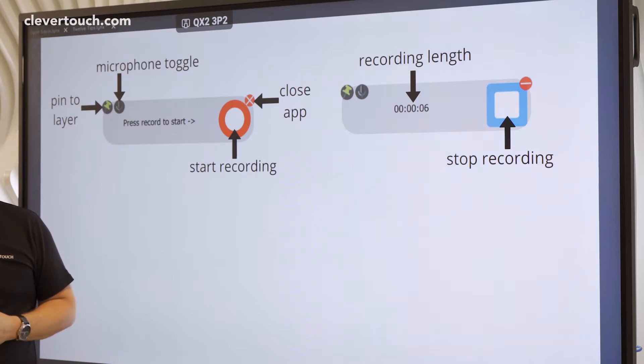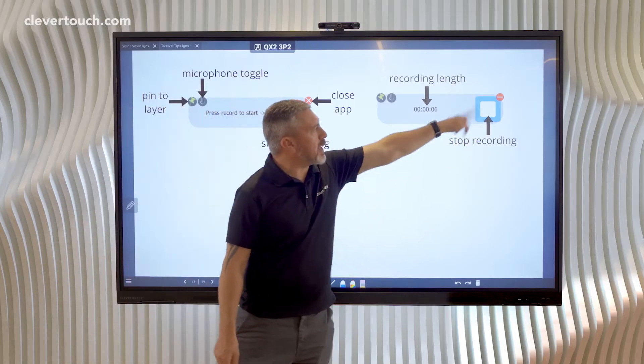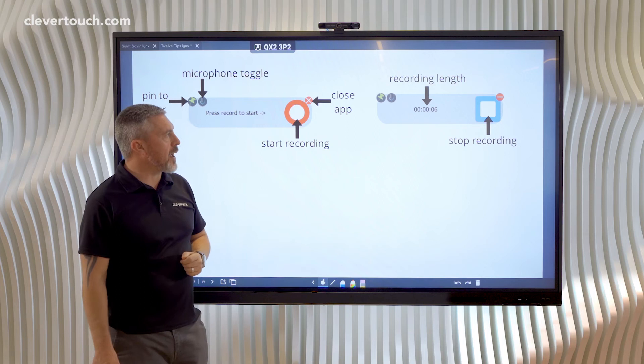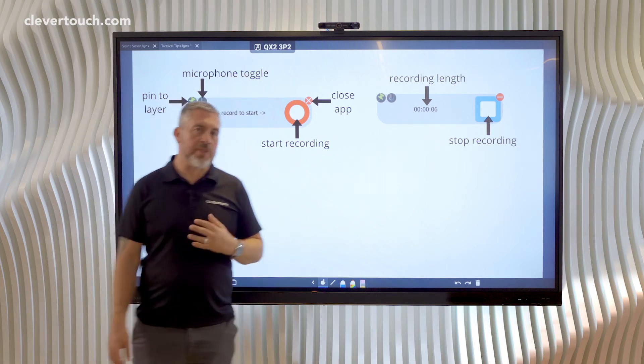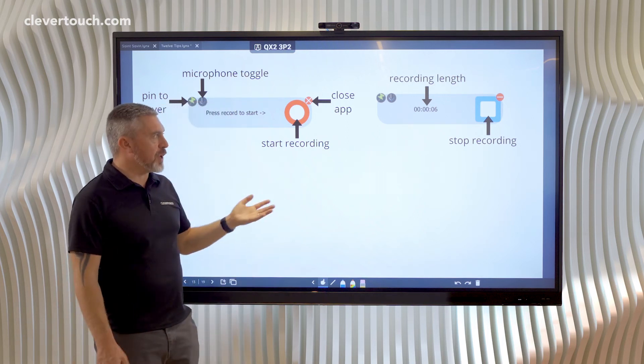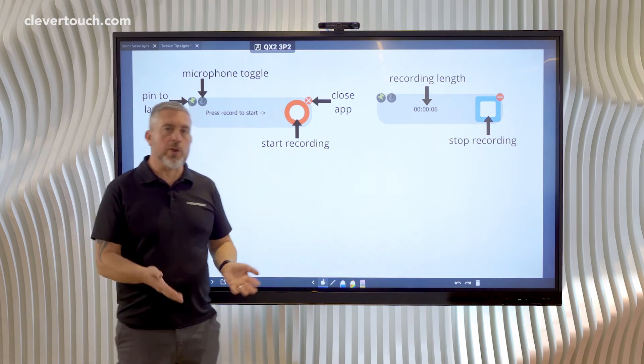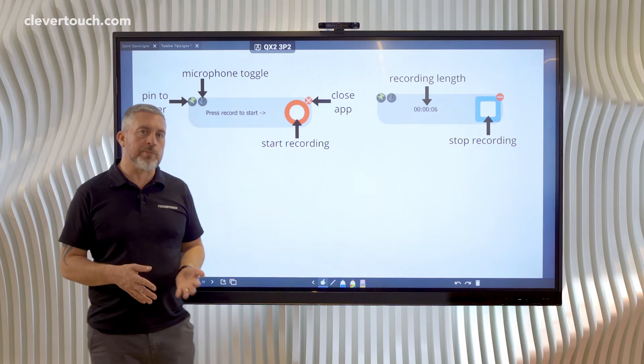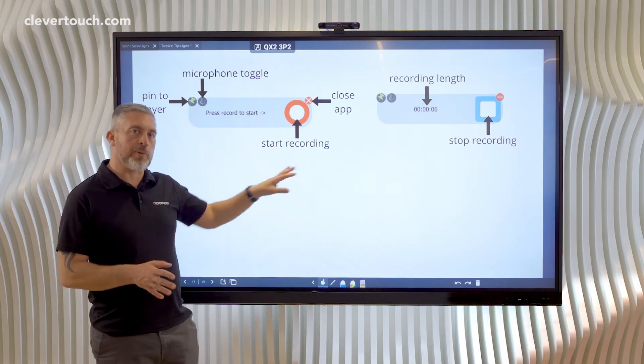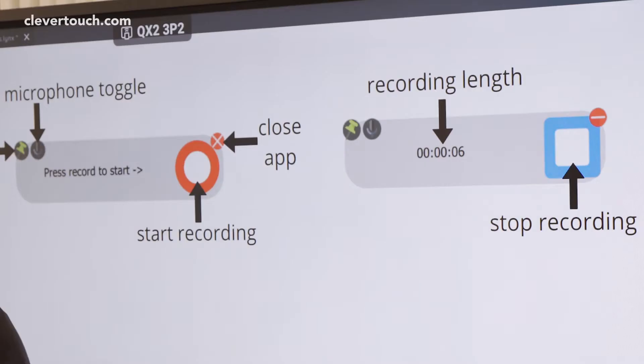When you are recording, it shows you how long the recording is, and you can stop recording by pressing on the blue square icon there. Then it will save your recording as an MP4 file, and therefore you could put it onto a YouTube channel, drop it onto your website, or even better, drop it into a Links presentation.